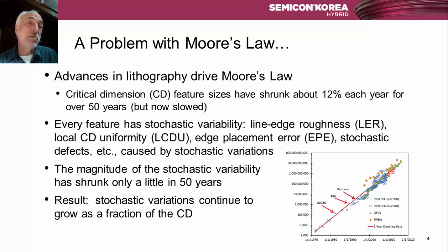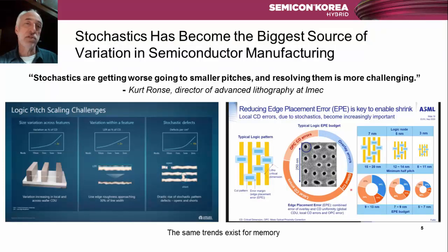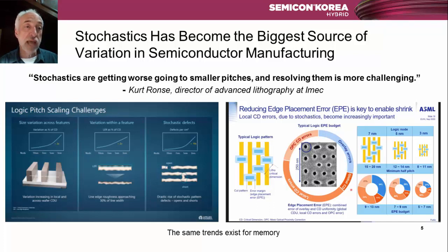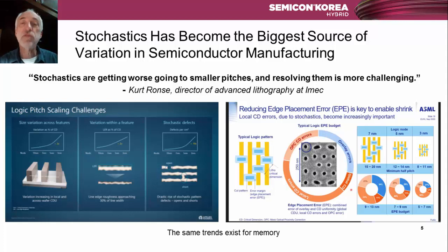So 10 or 20 years ago nobody really cared, but today it's a big problem — in fact, it's become the biggest source of variation in semiconductor manufacturing at the leading nodes. There's a quote from Kurt Ronza, director of advanced lithography at IMEC: 'Stochastics are getting worse going to smaller pitches, and resolving them is more challenging.' Slides from Applied Materials and ASML show the growing role of stochastics as a function of feature size for each new generation — to the point where, at the advanced nodes today in logic, stochastic variation is more than 50% of the edge placement budget. The same trends exist for memory.